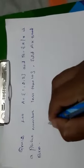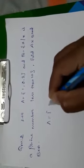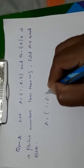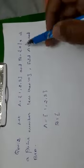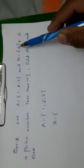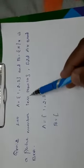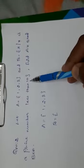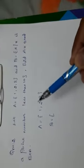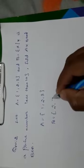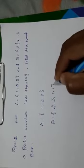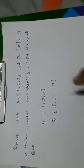We will find the solution children. A equals 1, 2, 3. B equals, you have to write the elements. X such that X is a prime number less than 10. So we have to write the prime numbers which are less than 10. What are the prime numbers less than 10? 2, 3, 5, 7. That's all.